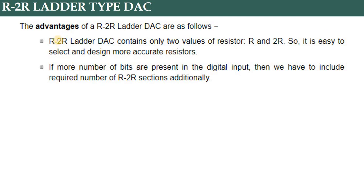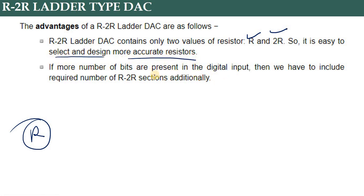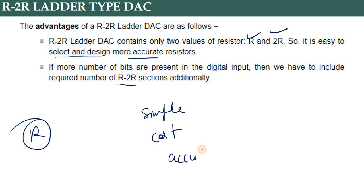The advantages of the R2R Ladder type DAC are: it is very easy to design. If more number of bits are present in the data system, we simply include the required number of R-to-2R sections — making it very simple to scale. Since only two resistance values are used, the cost is reduced. Accuracy is good and linearity is improved compared to the weighted resistor type.